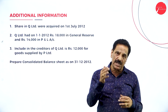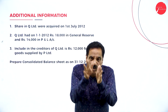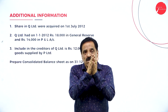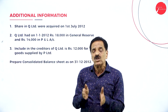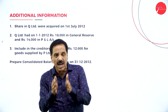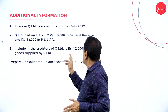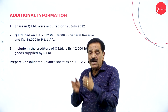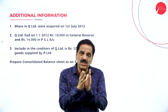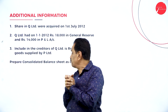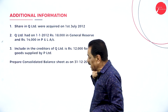Q is the credit purchaser, so Q becomes the debtor and P becomes the creditor. When they become one and the same entity, the question of debtor and creditor does not arise at all. So what you do: add both the creditors and deduct the mutual amount of 12,000; add both the debtors and deduct 12,000 as a mutual adjustment.